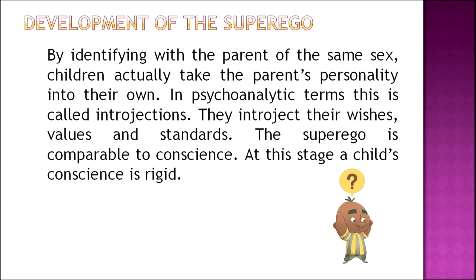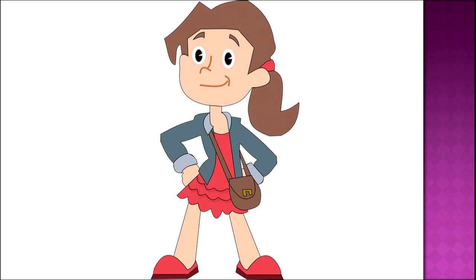By identifying with the parent of the same sex, children take the parent's personality into their own — in psychoanalytic theory, this is known as introjection. The children introject their wishes, values, and standards. The superego is comparable to conscience; at this stage, a child's conscience is rigid. By middle childhood, youngsters resolve their Oedipal conflicts, accept their sex roles, and can now turn their energies to acquiring facts, skills, and cultural attitudes — they become more skill-oriented at this stage.